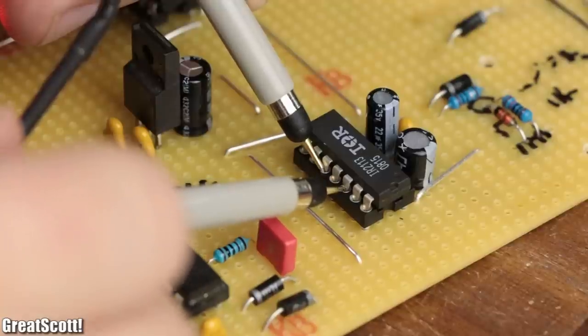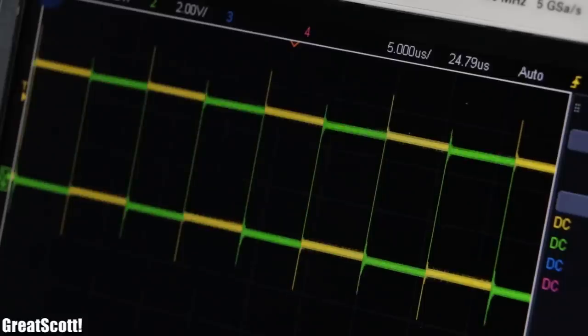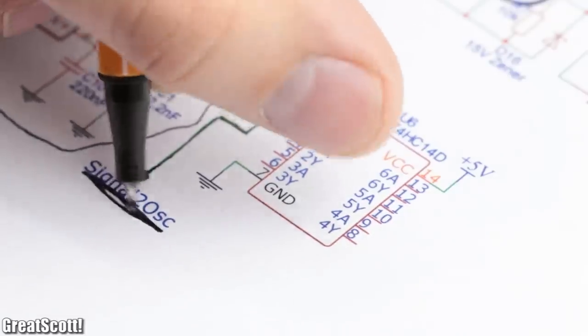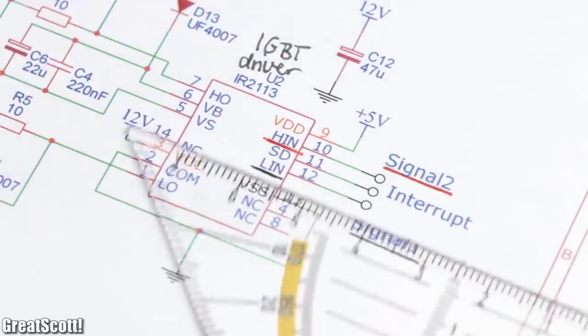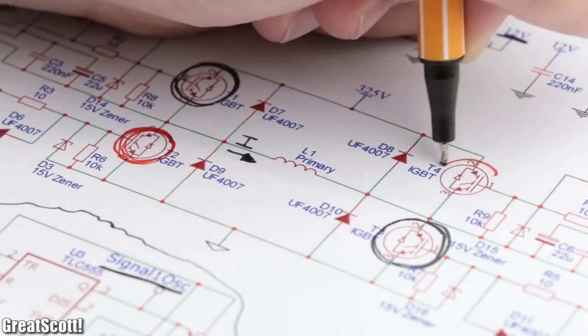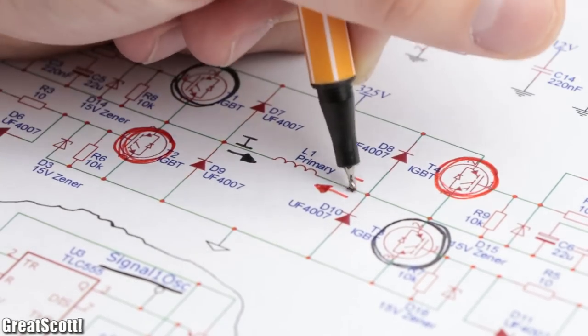Additionally, this signal is inverted by a Schmidt trigger, which then supplies the inverted signal to the low in of the left driver and the high in of the right driver, so that the other two IGBTs turn on after the first two turned off.